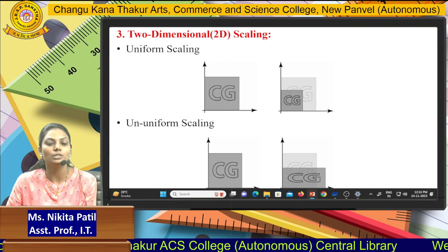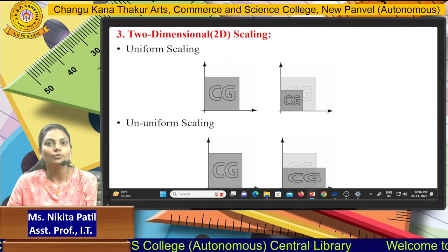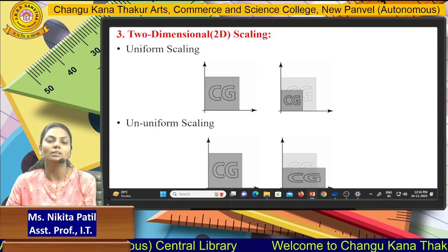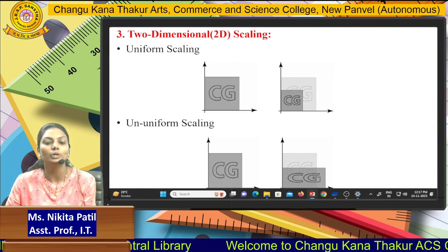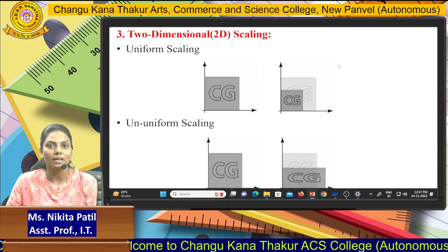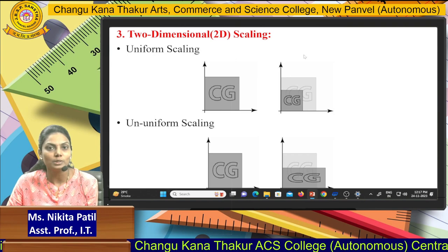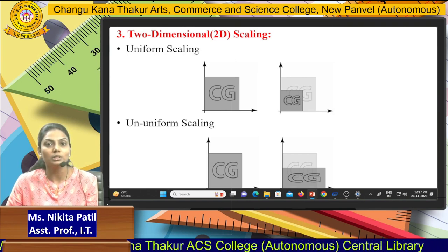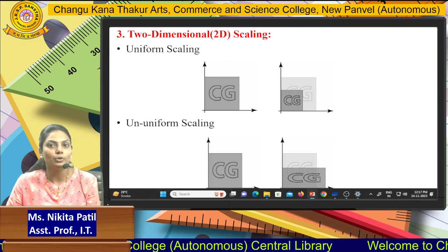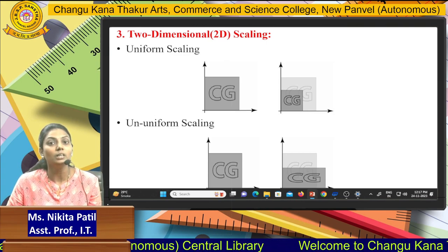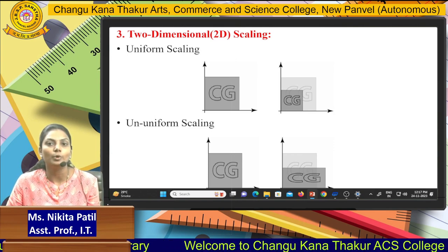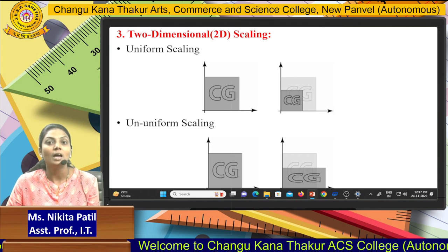Starting with two-dimensional scaling. Scaling involves different types of scales. You can scale an axis with two types: uniform scaling and non-uniform scaling. In the diagram you can see what uniform scaling and non-uniform scaling are. In uniform scaling, the scale is accurate — either reduced or increased proportionally.